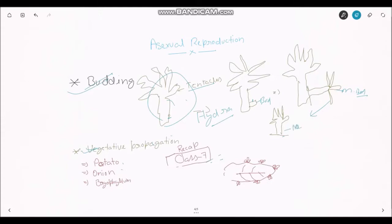This is budding. Budding can also be seen in yeast, so you have to remember that yeast also shows budding. Now we will go on to vegetative propagation. Vegetative propagation is a method which is used by farmers in rural areas or urban areas, and it is generally seen in potato, onion, and bryophyllum.